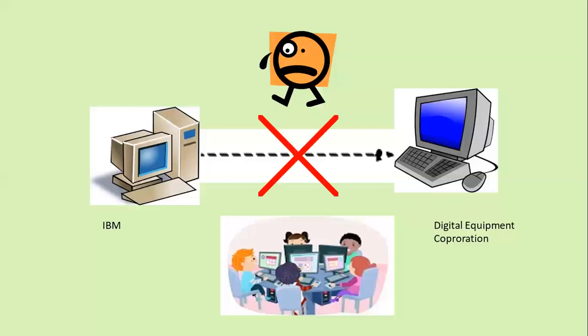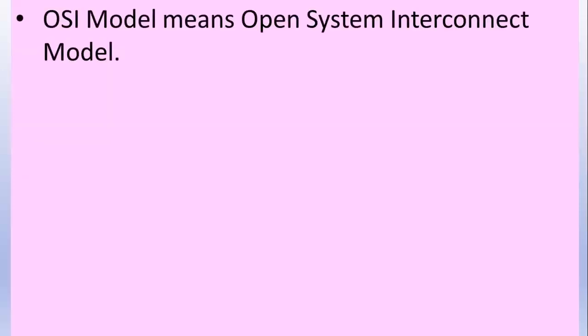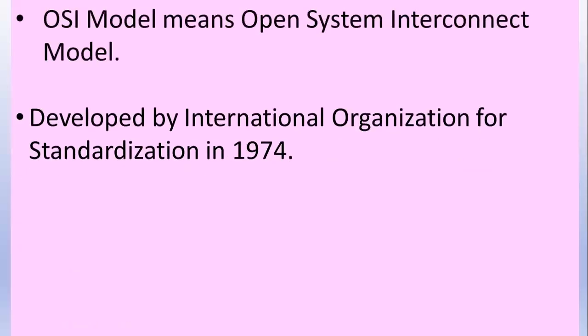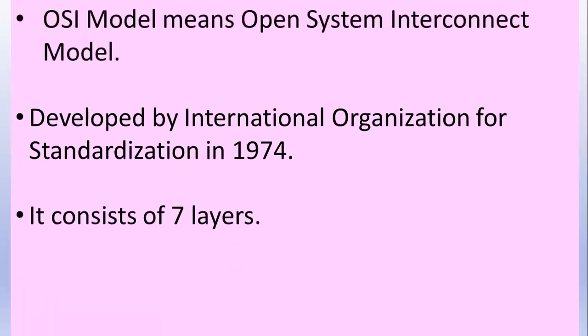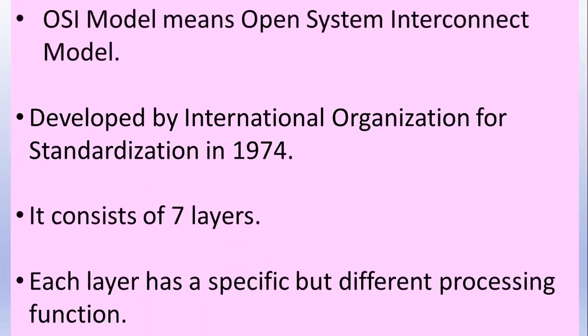The OSI model used a layered approach which gives a standard, and ISO made this model. ISO stands for International Organization for Standards. OSI model means Open System Interconnect model. It was developed by the International Organization for Standards in 1974. It consists of seven layers, and each layer has a specific but different processing function.